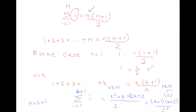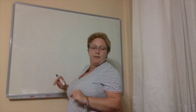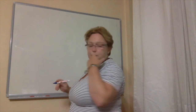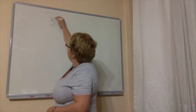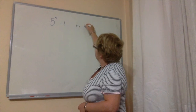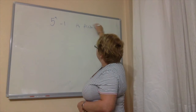What we've shown is that when we assume n equals k holds true, we've proven that n equals k plus 1 also holds true for the given statement. Our second example involves a divisibility problem: we're going to prove that 5 to the n minus 1 is divisible by 4.